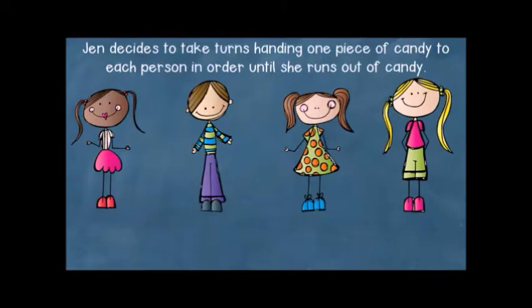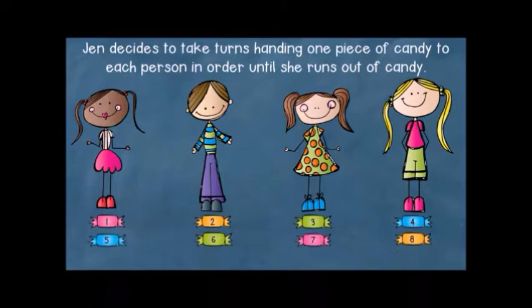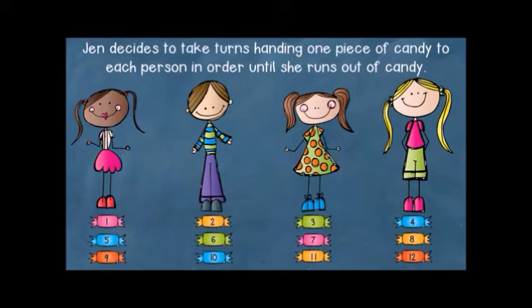Jen decides to take turns handing one piece of candy to each person in order until she runs out of candy. The first round: 1, 2, 3, 4. Second round: 5, 6, 7, 8. Third round: 9, 10, 11, 12. How many pieces of candy did each person get?